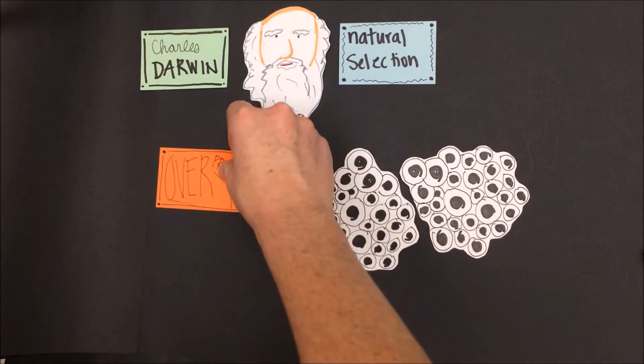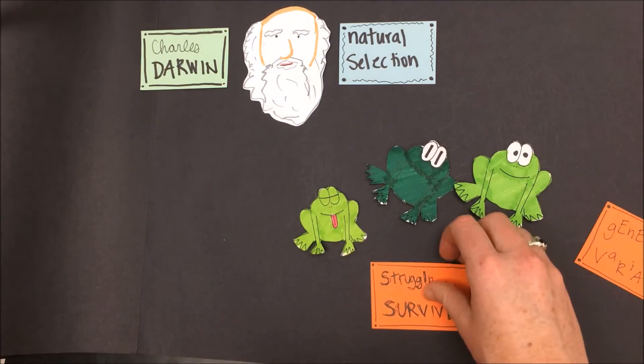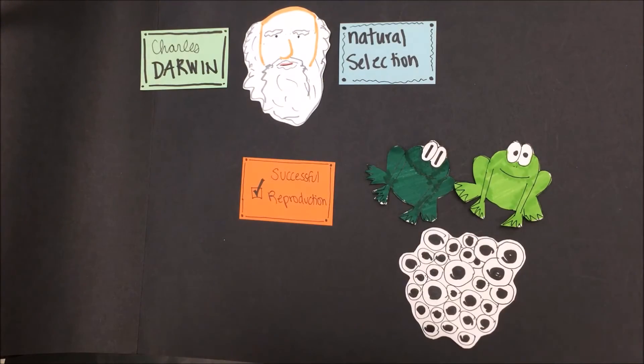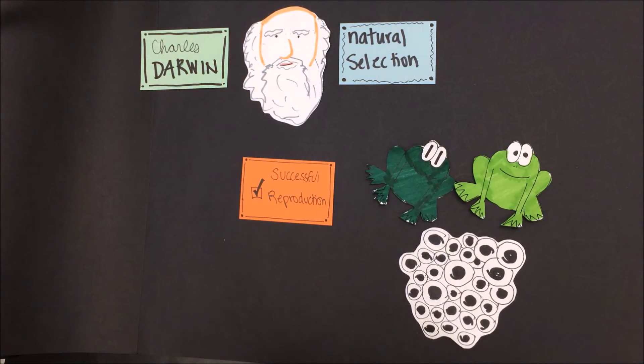The assumption here is that those frogs that were able to survive to adulthood have the strongest traits, or the traits that are best suited to this environment, and thus will pass their traits on to the next generation. Once again, we will go through the steps of overproduction, genetic variation, the struggle to survive, and successful reproduction. Once again, we see a cycle between these steps.